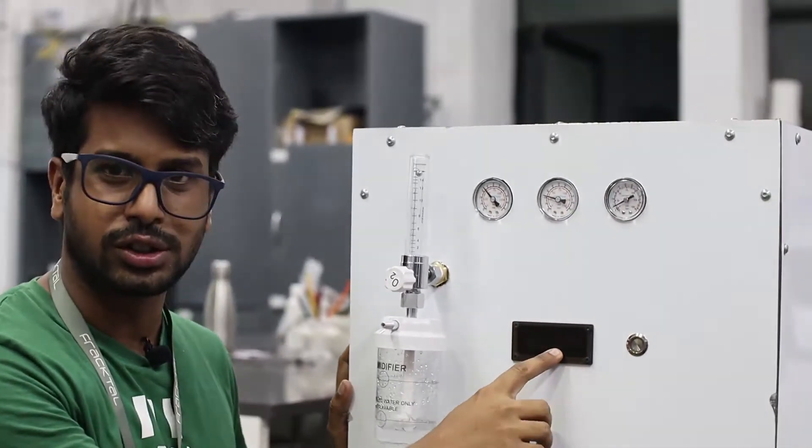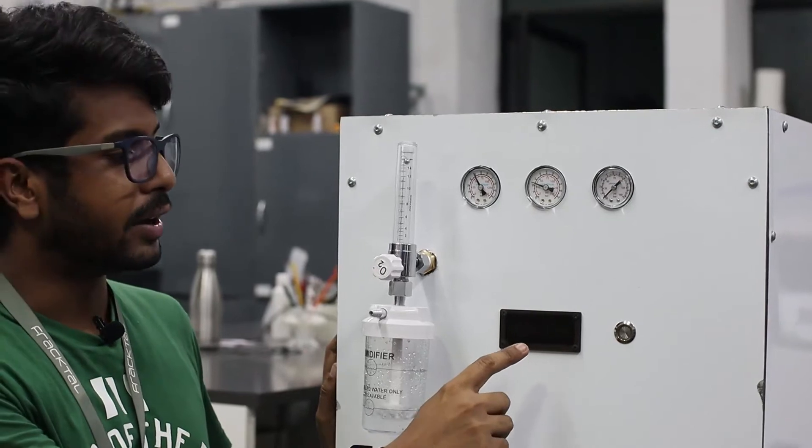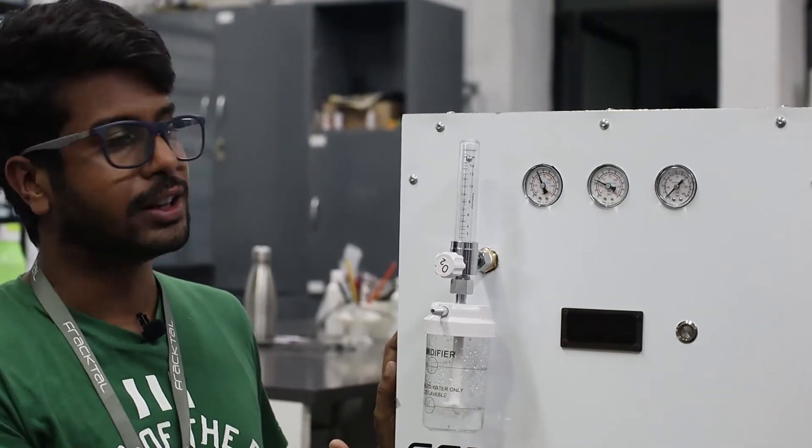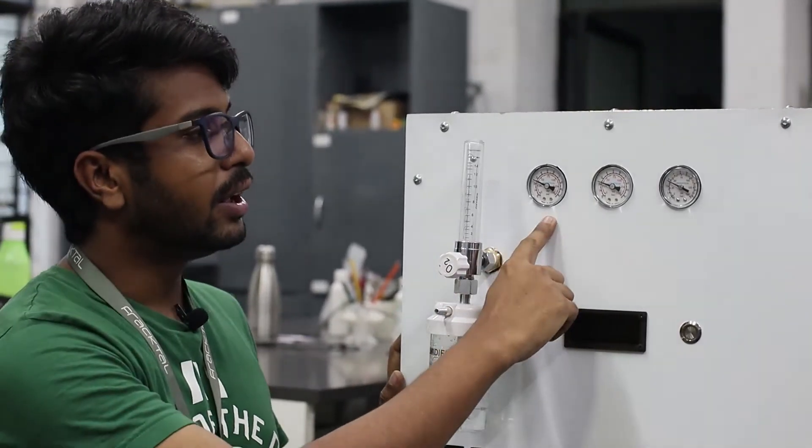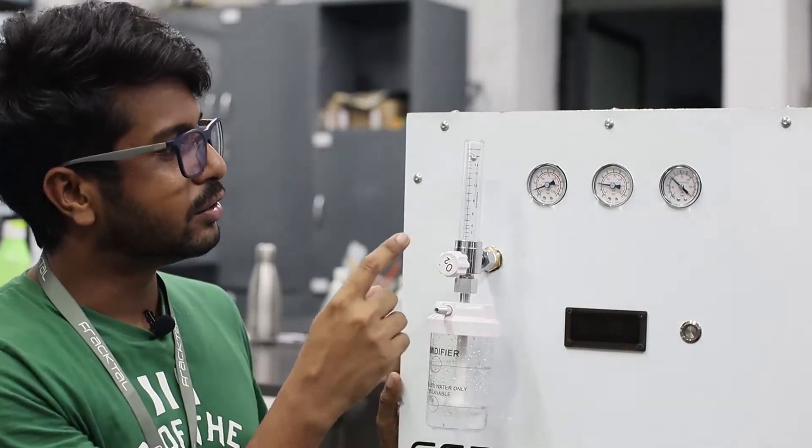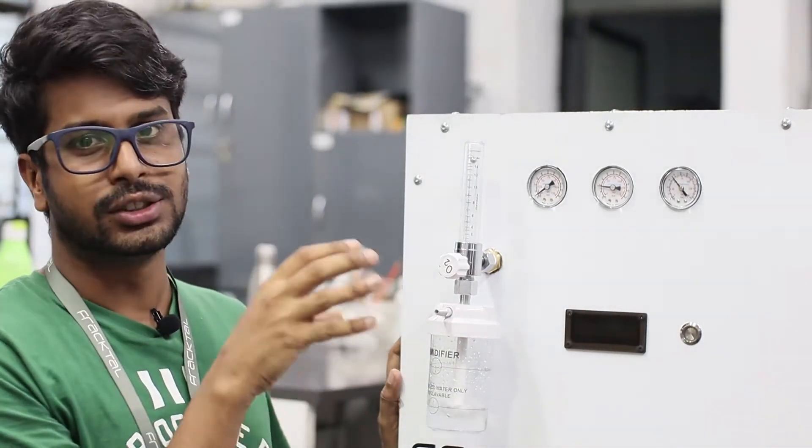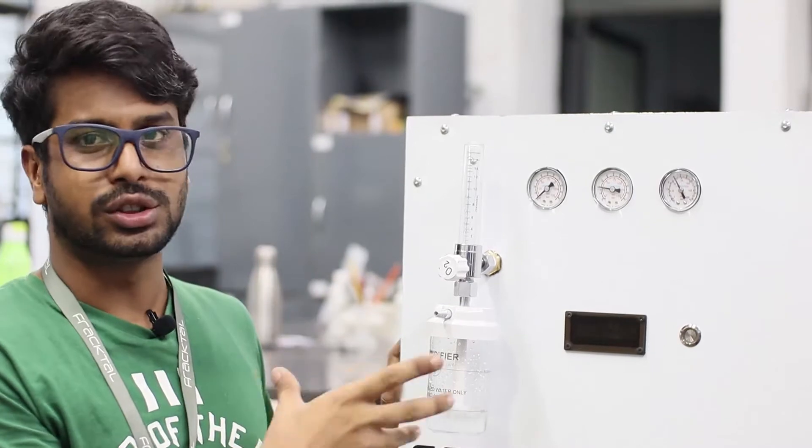We have a display up front which displays the oxygen concentration percentage and any alarms about anything wrong in the machine. We also have the pressure dials that are showing the critical pressures of the PAH system of the oxygen concentration.